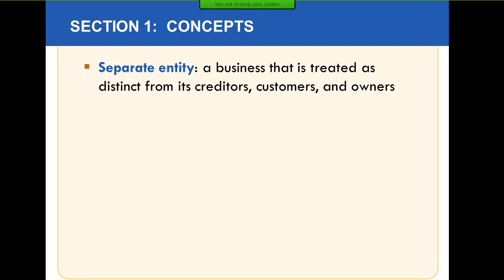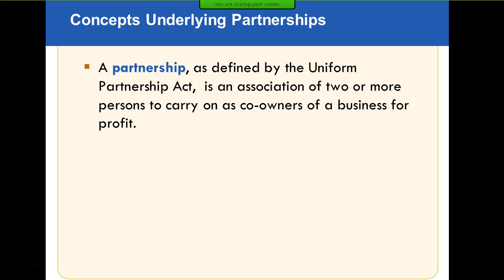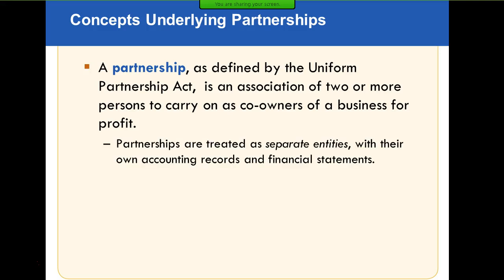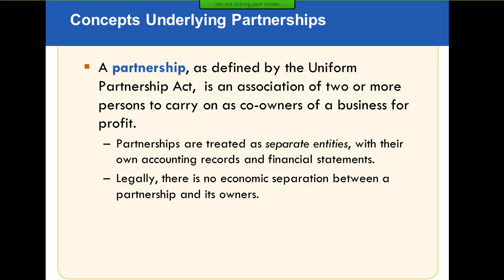All business entities are separate entities, as we talked about in chapter one. The transactions are recorded separate from the owners, creditors, or customers. Generally, a partnership is an association or joining of two or more people to carry on as co-owners of a business for profit. They are separate entities and as a result have their own separate set of books.